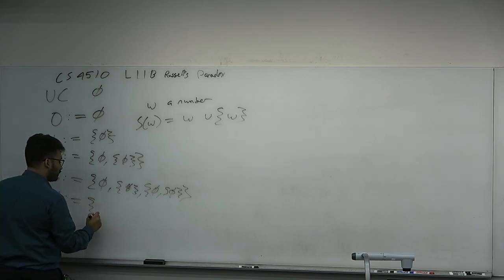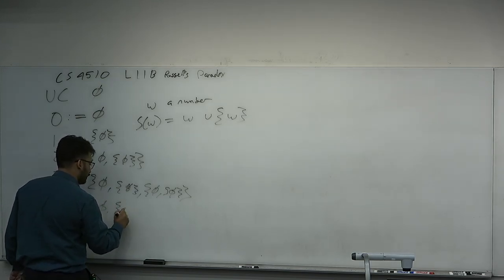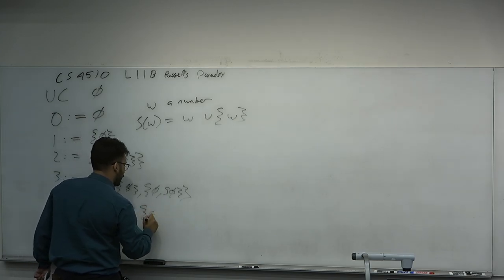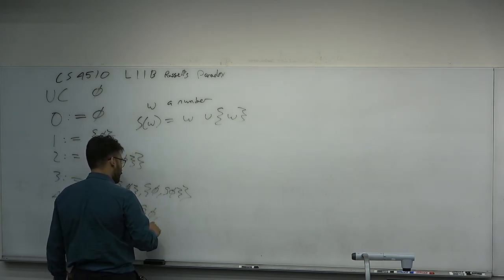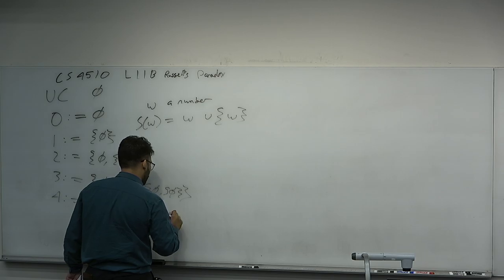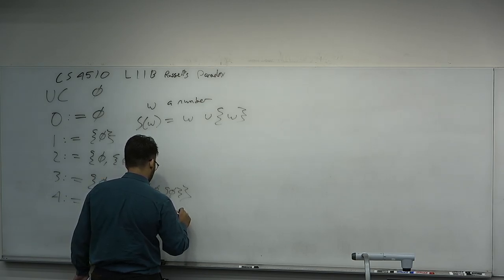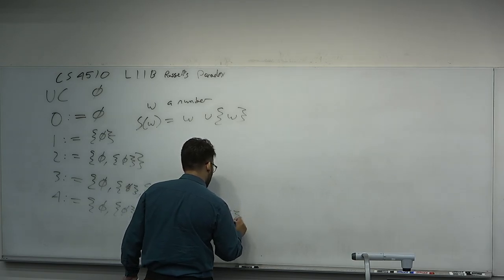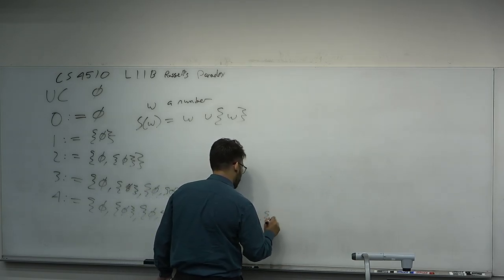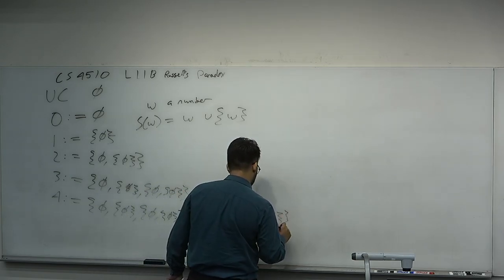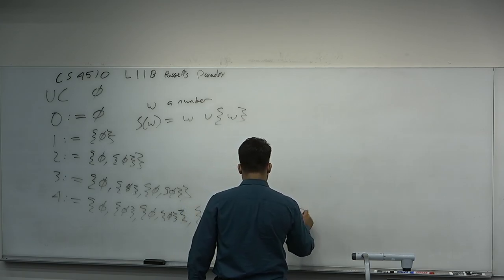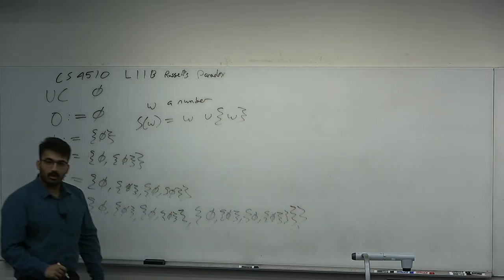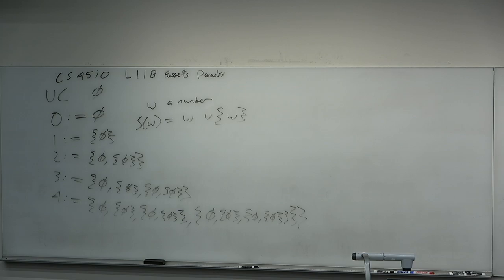For example, why by unrestricted comprehension does the empty set exist? Yeah, predicate that is always false, choose the predicate to be some contradiction. Nothing satisfies such a contradiction, so there exists a set with no elements in it, and that set is therefore the empty set. So, the empty set exists not axiomatically, but constructed through the axiom of unrestricted comprehension. We'll define the number 0 to be the empty set. Then, for w, a number, or an ordinal here, define the successor of w to be the set w union the set containing w.